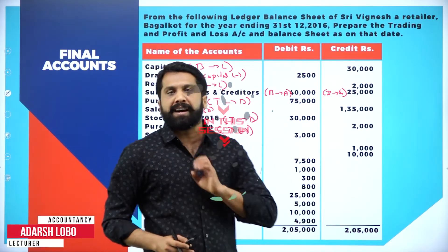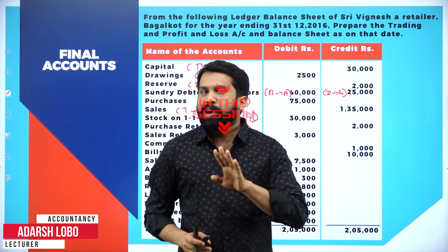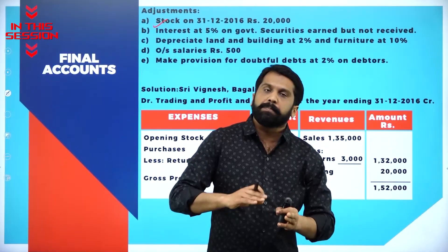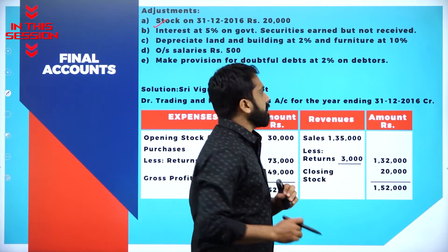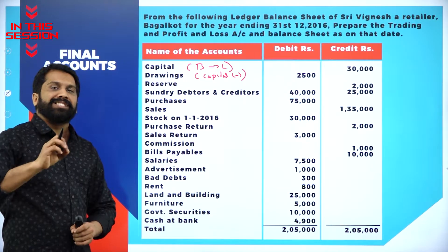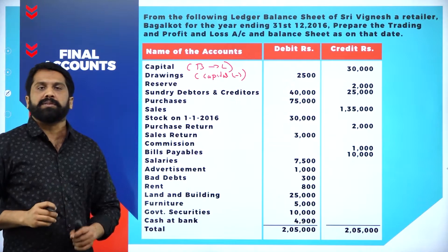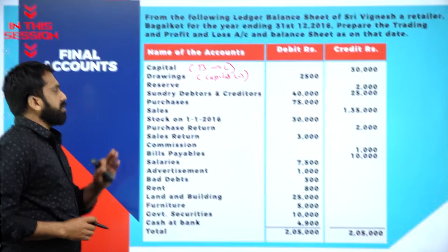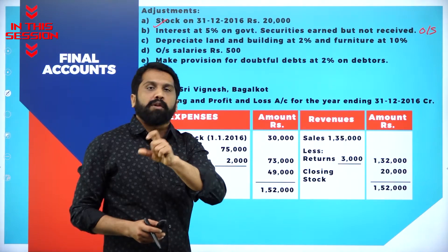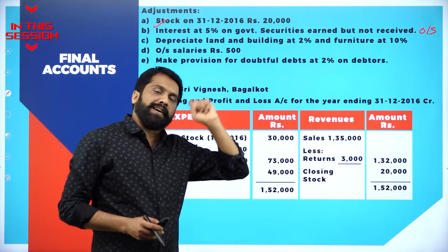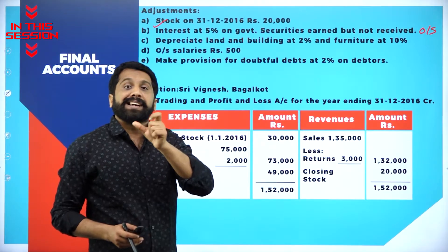You purchased 50 items. Out of 50, 10 items are damaged. Earned but not received means it is nothing but outstanding. Reserve - we call it as general reserve, capital reserve or some specific reserves. If you find the word provision, doubtful, bad, then you should find debtor's value.